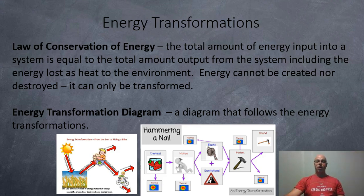Okay, so in summary the law of conservation of energy is the total amount of energy input into a system is equal to the total amount of output from the system including the energy loss as heat to the environment. Energy cannot be created nor destroyed. It can only be transformed. And an energy transformation diagram is a diagram that follows the energy transformations as energy flows through the system.